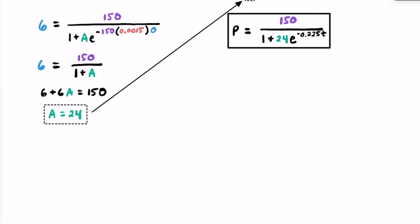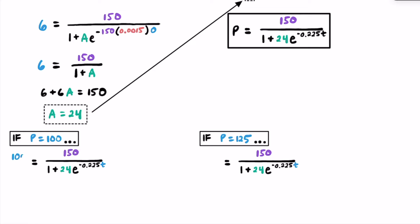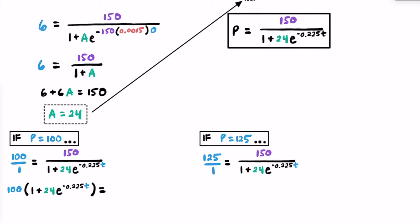Since we're doing essentially the same process twice, let's find t when p is 100 and when p is 125. We substitute 100 in for p in the first case and 125 in the second. Writing these as fractions, we can cross multiply to deal with the fractions more easily. For the first cross product when p equals 100, we get 100 times the quantity 1 plus 24e to the negative 0.225t, and on the other side, 1 times 150 gives us simply 150.